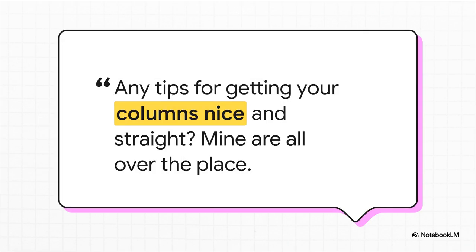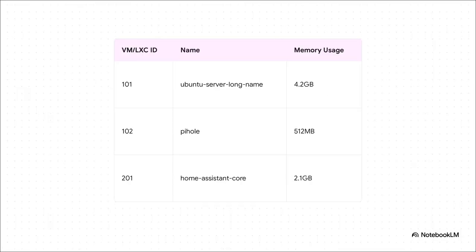After all the high-level debate about monitoring philosophy and ZFS internals, the conversation landed on what might be the most relatable problem for anyone who's ever written a command-line script: the script's output was just messy. The columns didn't line up at all, and it doesn't matter how brilliant your code is — if the output is ugly, it just feels wrong. The solution was beautifully simple: just pipe the output through the `column -t` command for perfect alignment. A small but deeply satisfying victory.